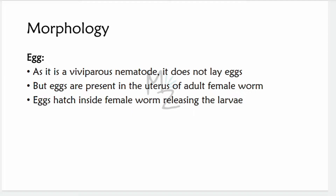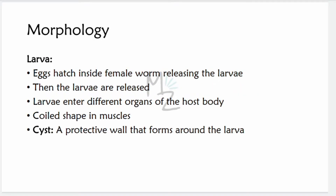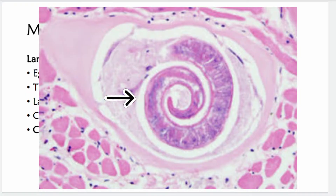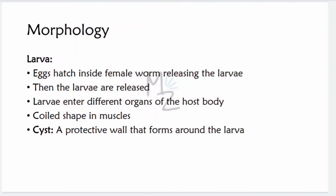After hatching inside the female worm, the larvae are released and enter different organs of the host body. The larvae are found in a coiled or spiral shape within striated muscles of the host. They are covered with a cyst — a protective wall surrounding the larvae.